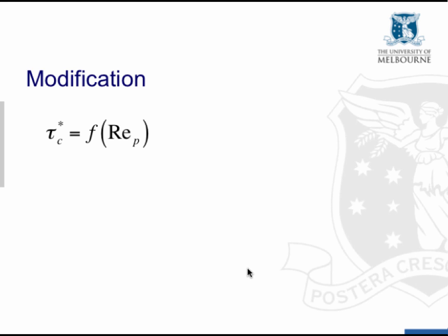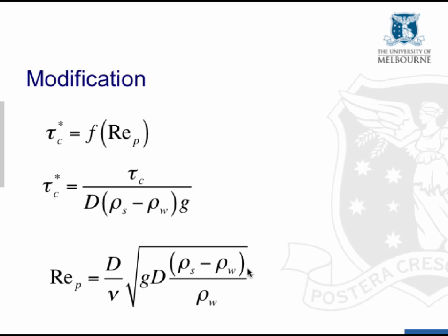And that uses the same term that Shields used, the critical dimensionless shear stress, but a different independent variable: the particle Reynolds number. And again this is Shields dimensionless critical shear stress, and here's the formula for the Reynolds particle number which is a function of particle diameter, the kinematic viscosity, gravitational acceleration, and the density of the sediment and the density of water shown here.